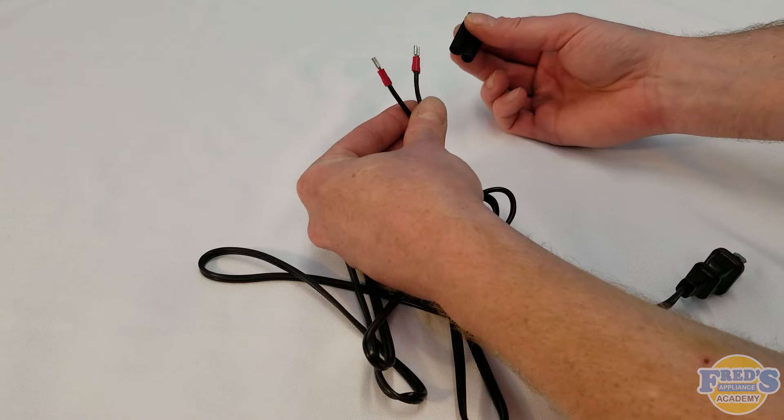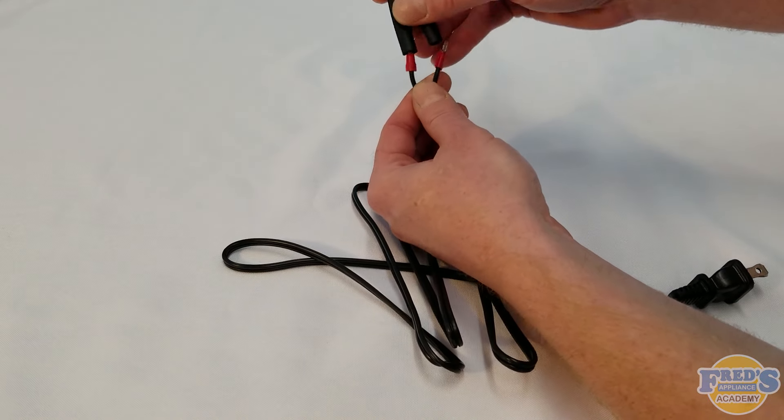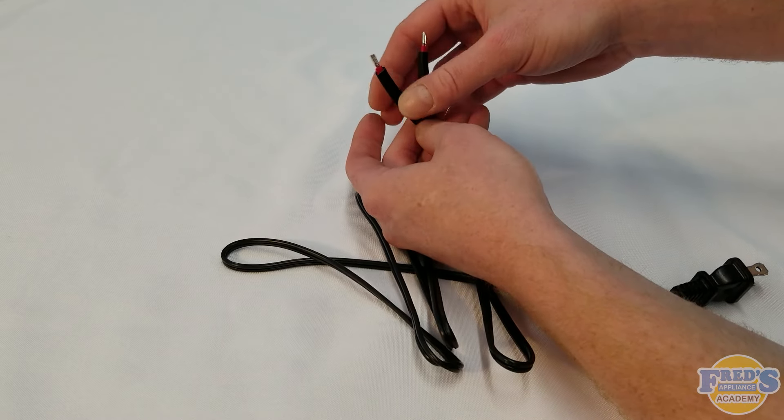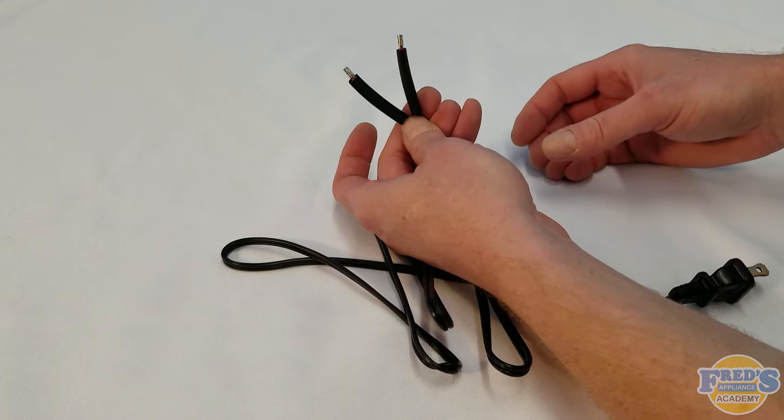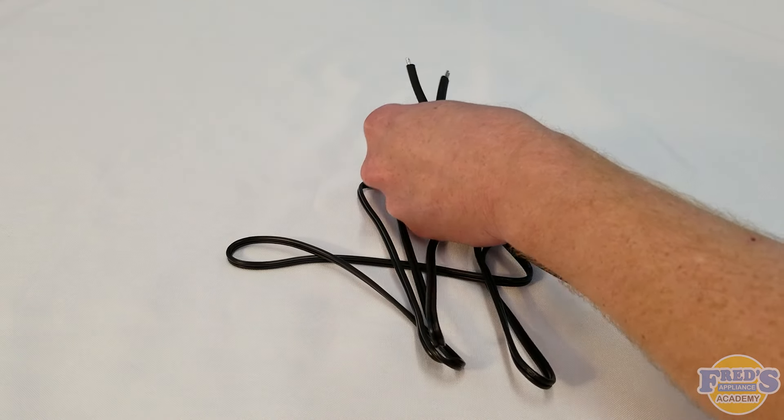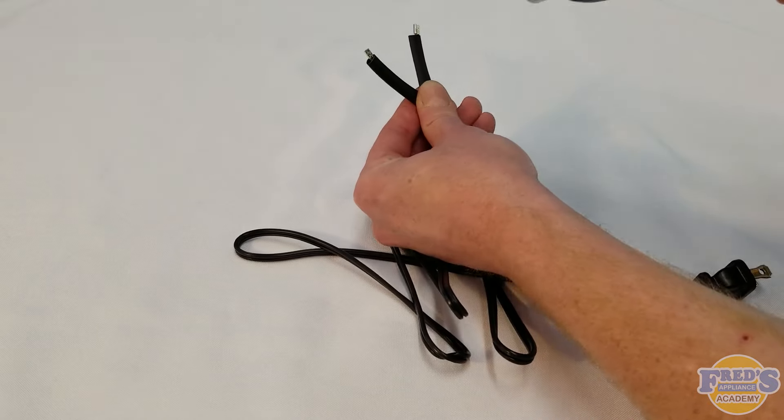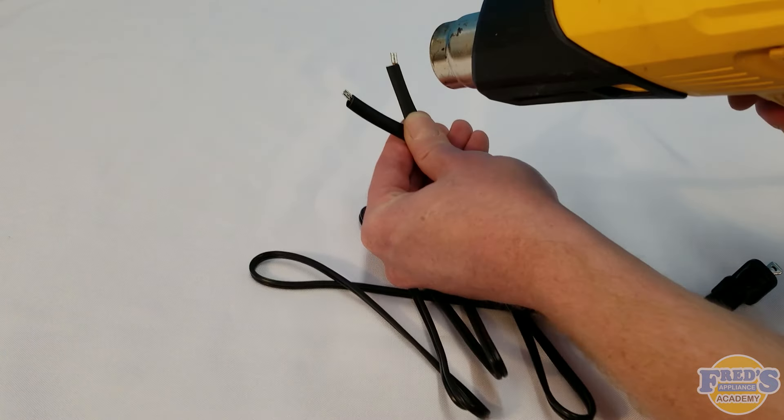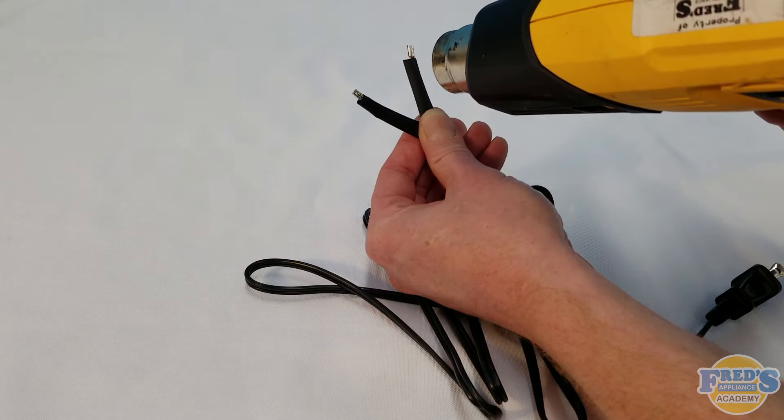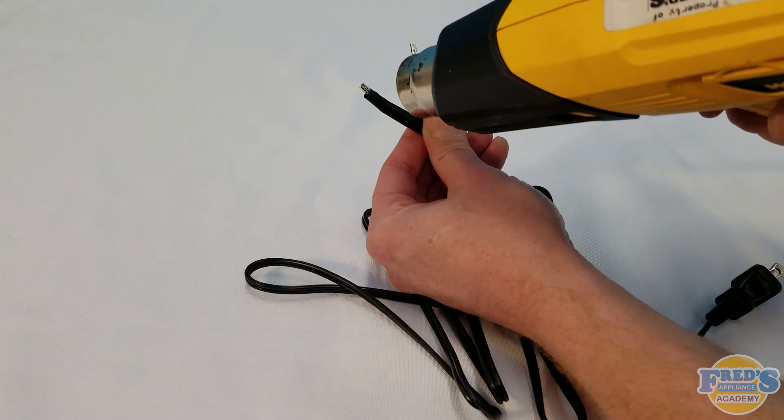After the connectors have been secured, we're going to take some shrink tube and slide it over the connectors as well as the wiring itself. After we shrink down this shrink tube, this allows the wiring to be a little bit more rigid and deal with everyday use. It also prevents the crimp-on connectors from accidentally being pulled off. However, if they are in need of being removed, you should always grab the connector and never pull on the wiring.